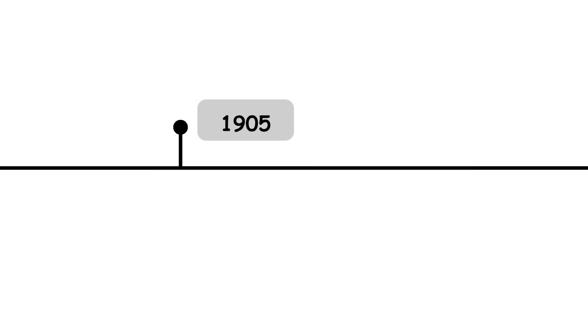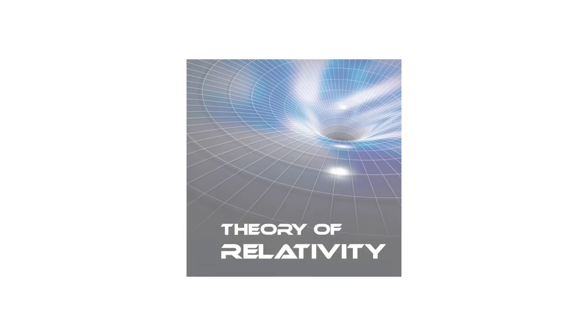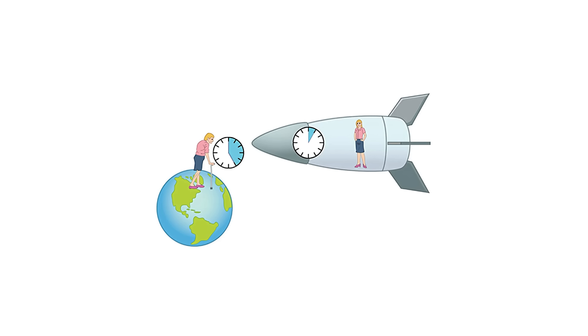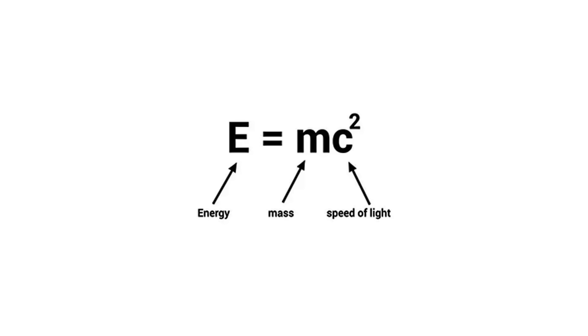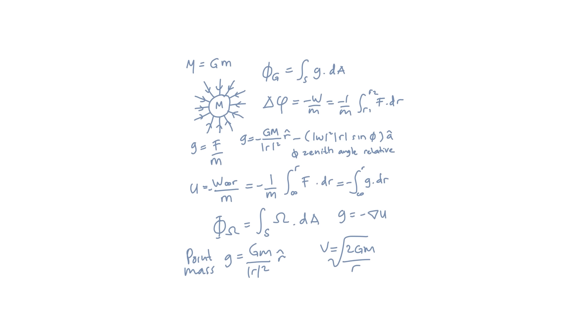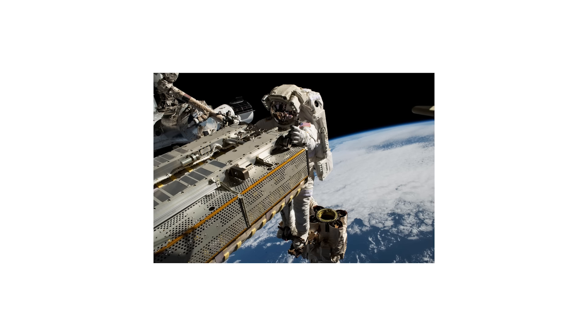1905: Theory of Relativity. Einstein's theory of relativity revolutionized our understanding of space, time, and gravity. It explains phenomena such as time dilation, space-time curvature, and mass-energy equivalence, making it essential to modern physics, cosmology, and advanced technology.